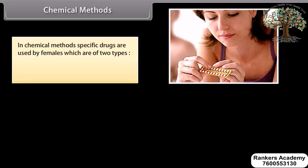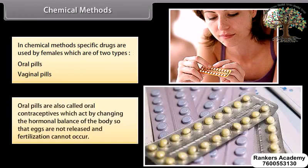In chemical methods, specific drugs are used by females, which are of two types: oral pills and vaginal pills. Oral pills are also called oral contraceptives, which act by changing the hormonal balance of the body so that eggs are not released and fertilization cannot occur.